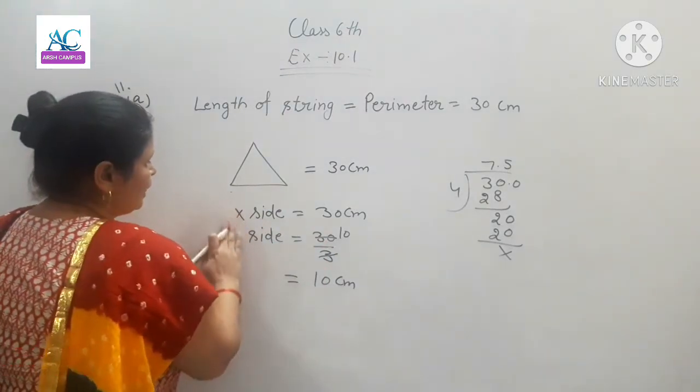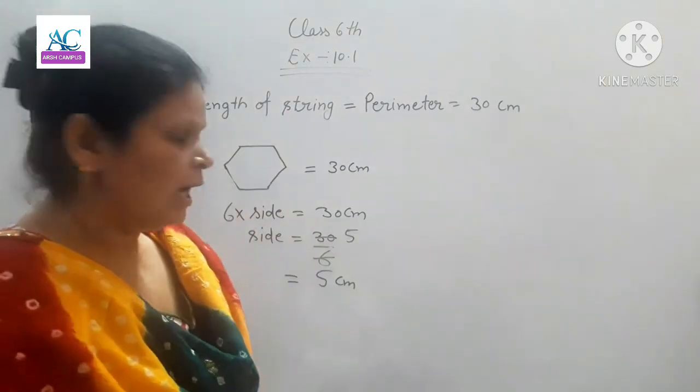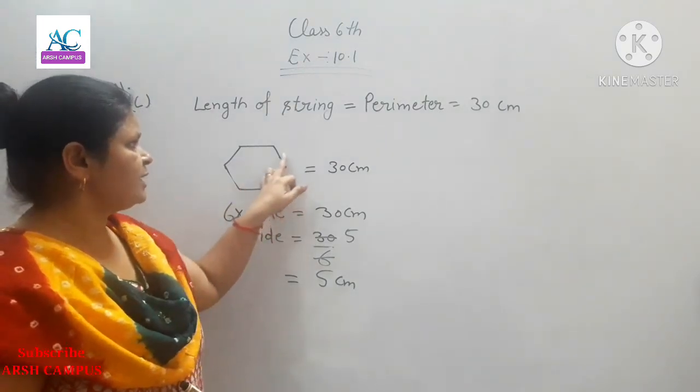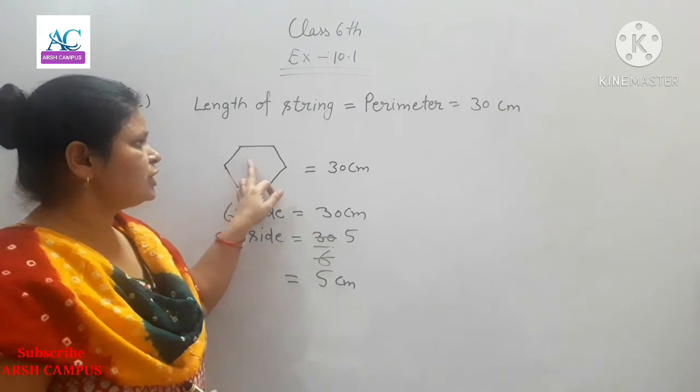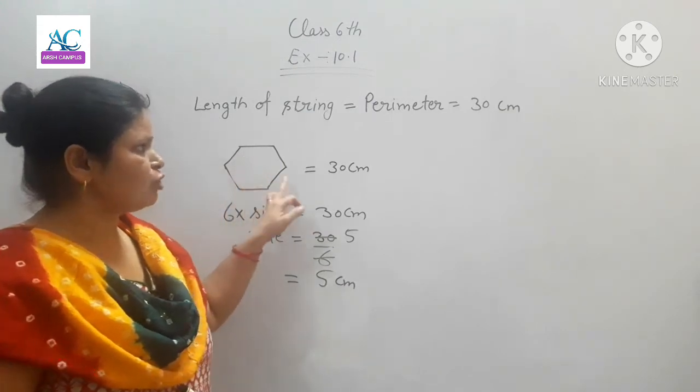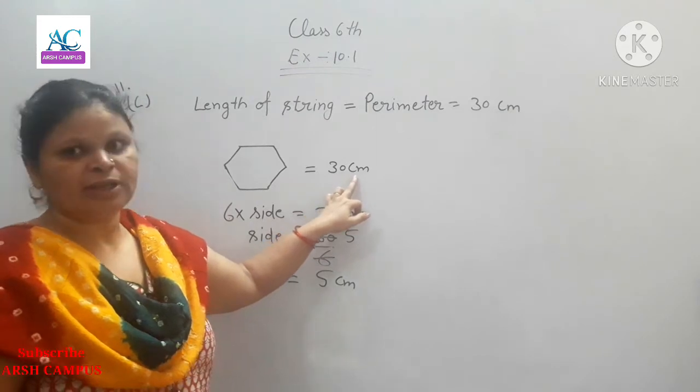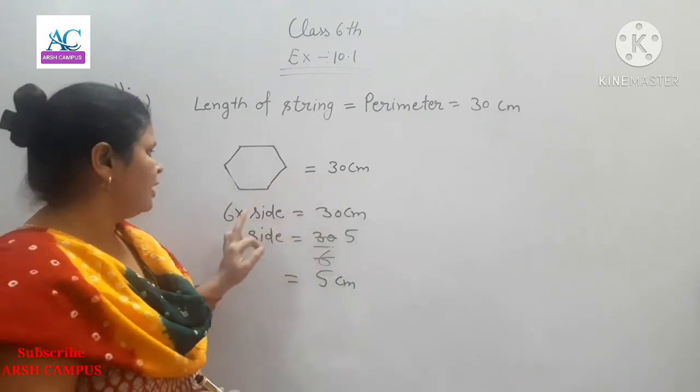Finding the perimeter of part C, a regular hexagon, with six equal sides. The string length given is 30 centimeters, meaning the perimeter is 30 cm.